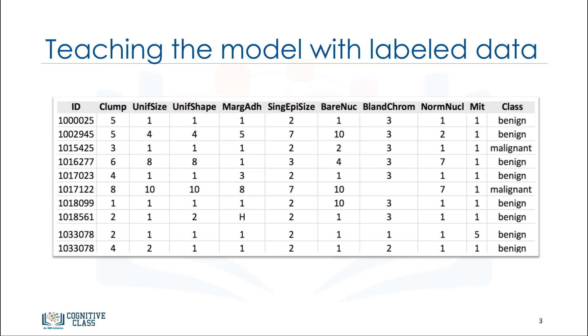Let's start by introducing some components of this table. The names up here, which are called clump thickness, uniformity of cell size, uniformity of cell shape, marginal adhesion, and so on, are called attributes.